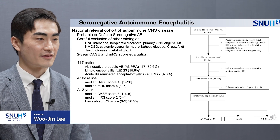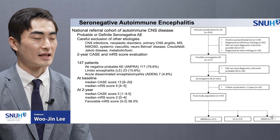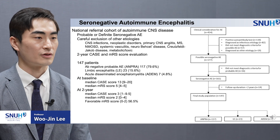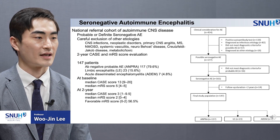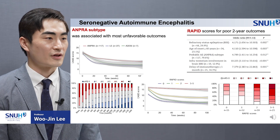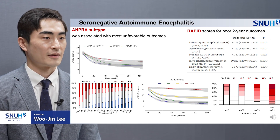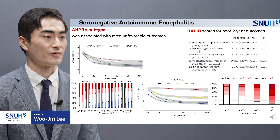At baseline, the Marion case score was 13 and MRS score was 5. At two years, the Marion case score was 3 and MRS score was 2. Overall, the frequency of favorable two-year outcome was 56%, which is about 20% lower than that of NMDAR encephalitis. Although the baseline severity was similar among the subtypes, the ANPRA subtype showed a slower rate of recovery and the two-year functional outcome was the worst in the ANPRA subtype.